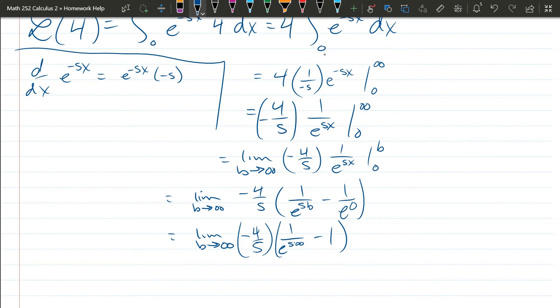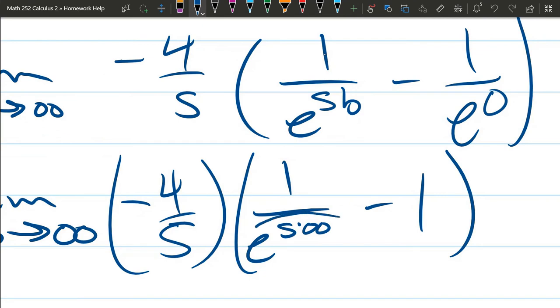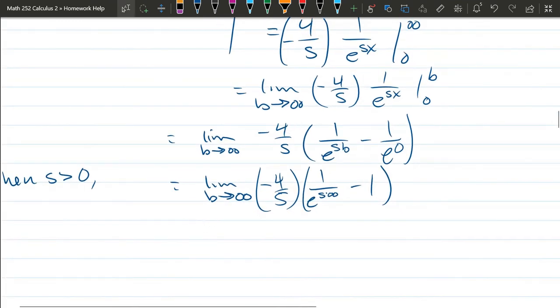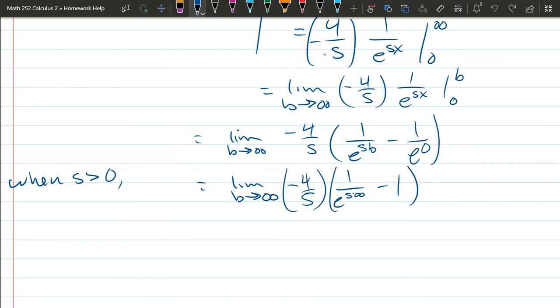Looking at this, when s is greater than 0, that means the reason I need s to be greater than 0 right here is because that will make this, what I've circled, infinity. But 1 over infinity will be 0. So I need that to converge, and it's only going to converge if this goes to 0. When s is greater than 0, I have positive times infinity, which is infinity.